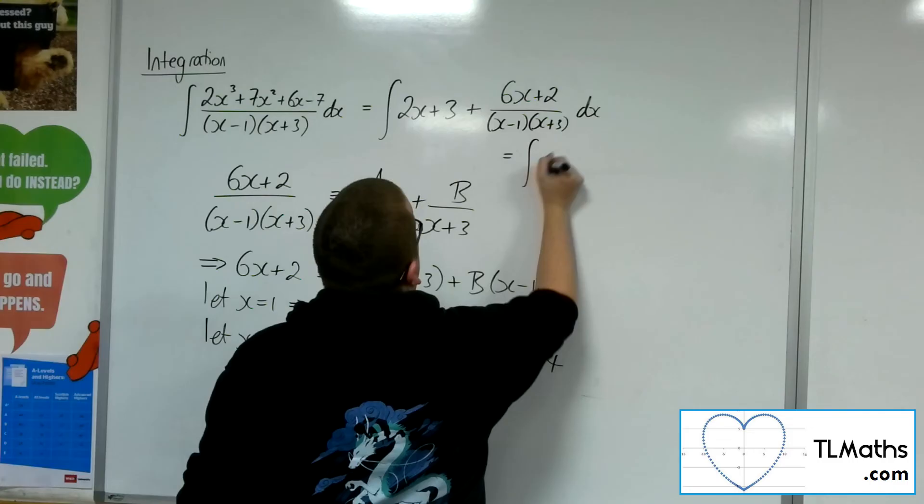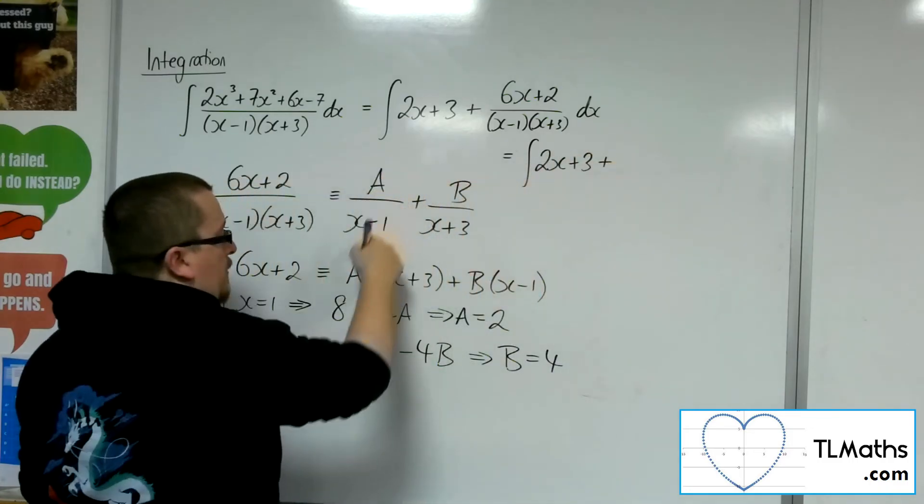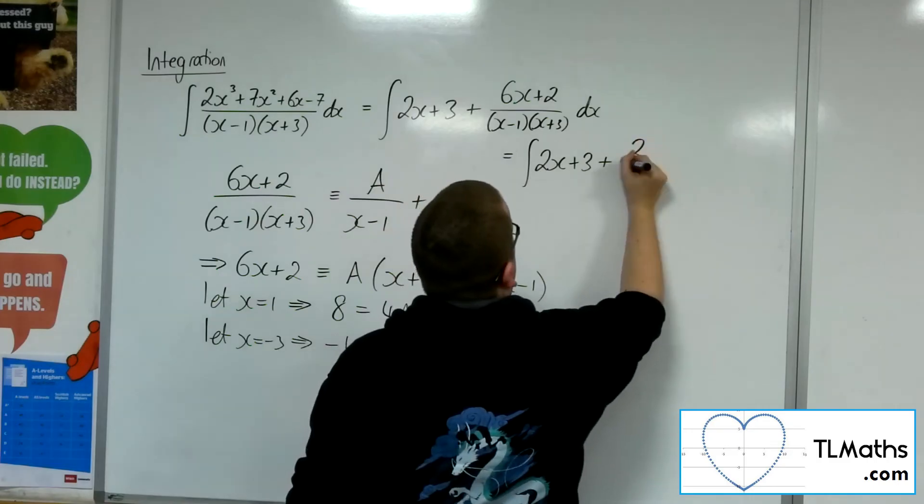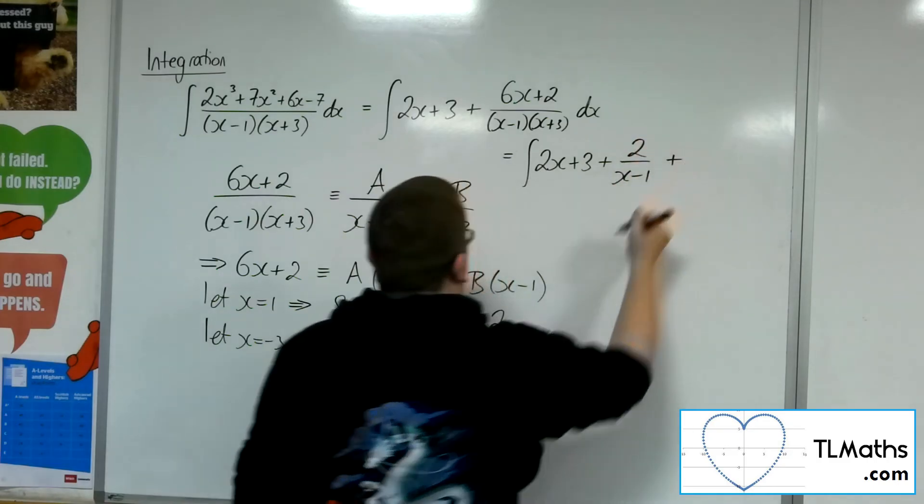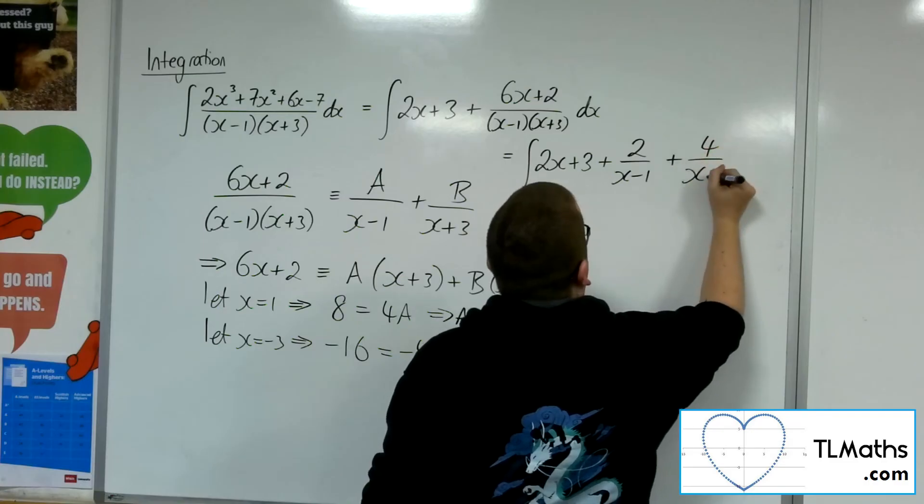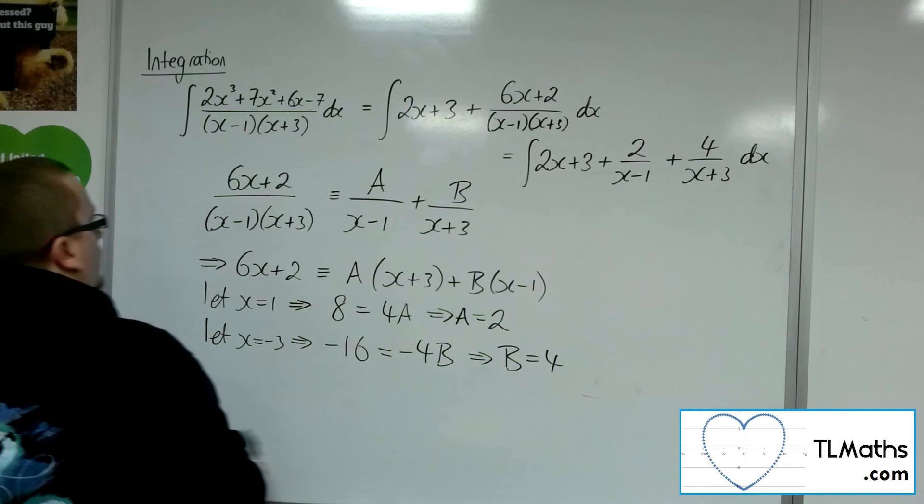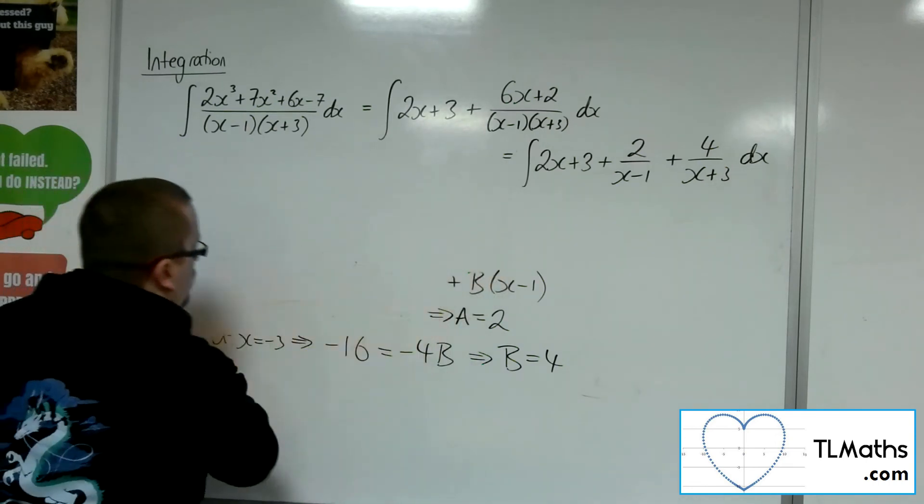So I can now say the integral is the integral of 2x plus 3 plus A over x minus 1, so 2 over x minus 1, plus B over x plus 3, so 4 over x plus 3, dx. So that's that section.